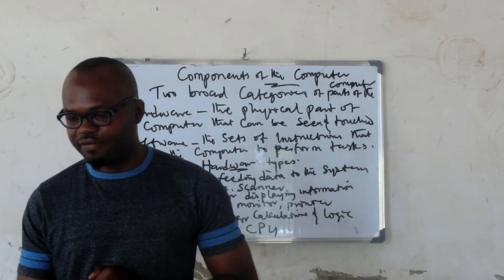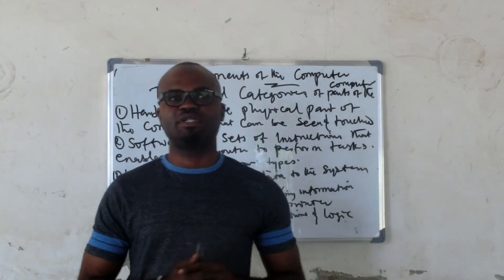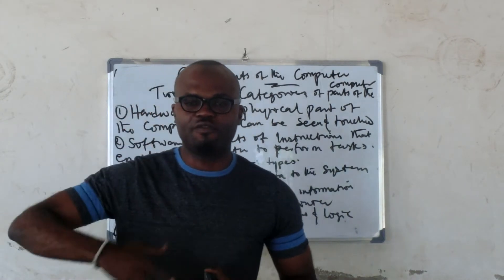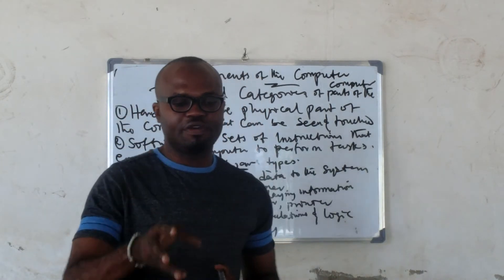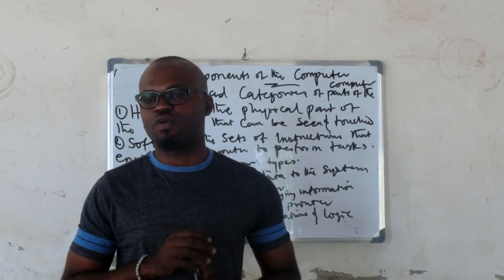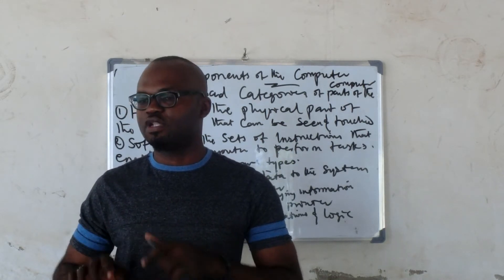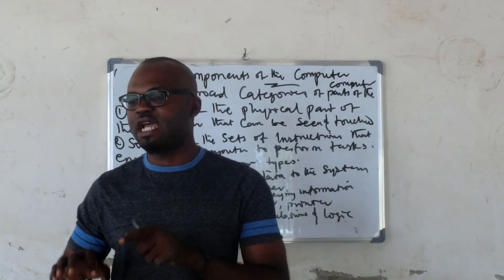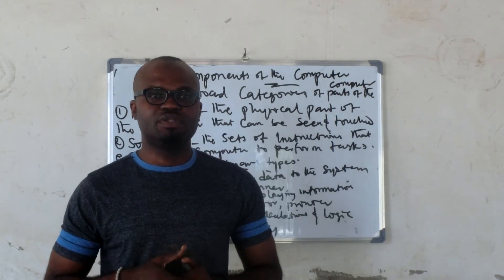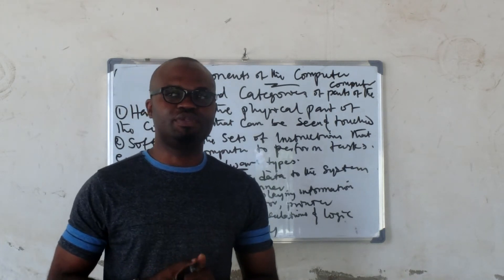Software is virtually a set of instructions that enable the computer to perform functions. So your software called Microsoft Word enables the computer to perform functions. But what is the function of the computer? There are also other software that enable the computer.